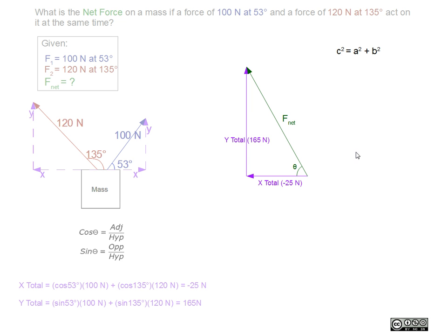To solve for net force, we use the Pythagorean theorem: c squared is equal to a squared plus b squared. We can plug our values in and solve.